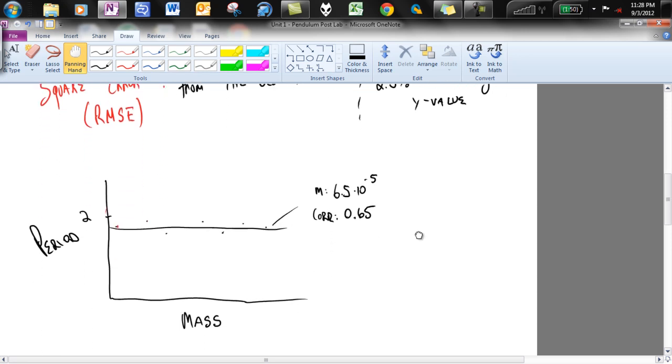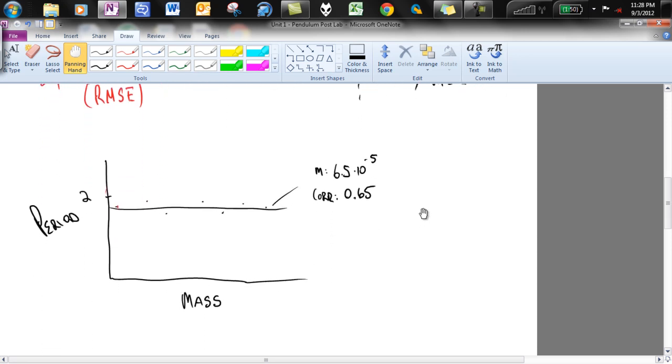So I actually just kind of grabbed a group's data here of the period versus mass, and you can see their slope is about 6.5 times 10 to the negative 5th. You'll notice that that is a very small number. The correlation is 0.65. So right looking at this, you're like, yeah, you know what, this is probably not, these two variables are not correlated, which means there is no relationship between these.